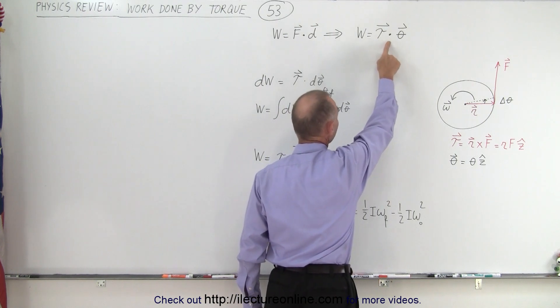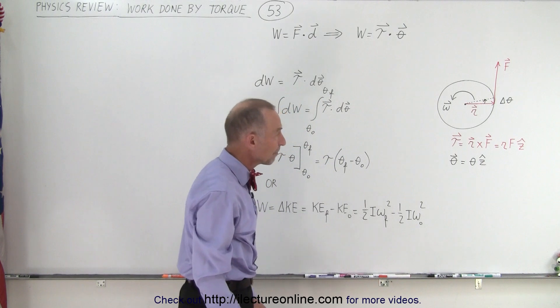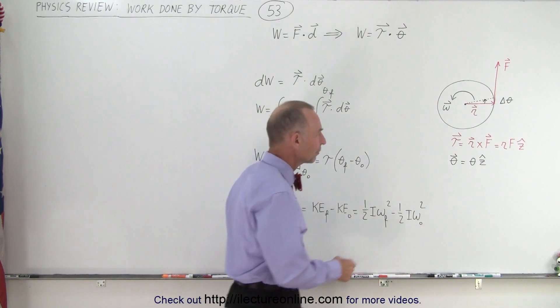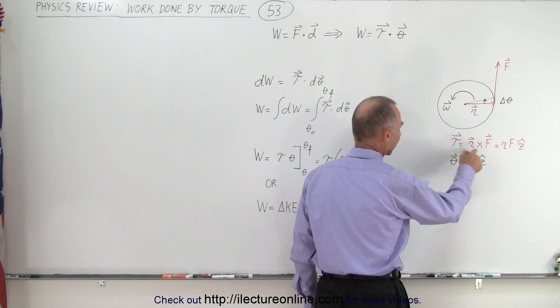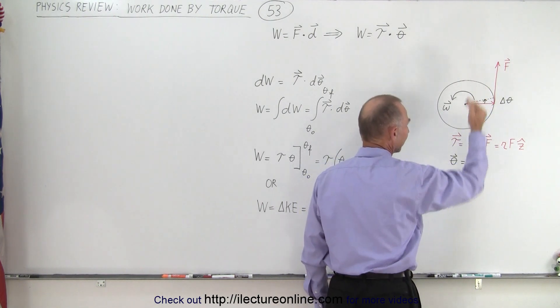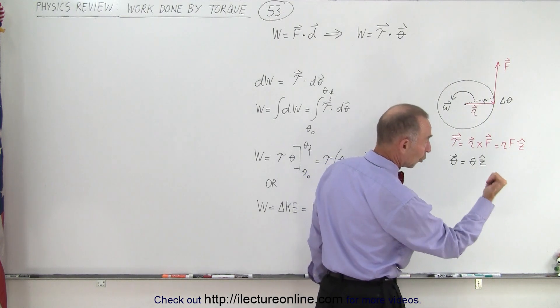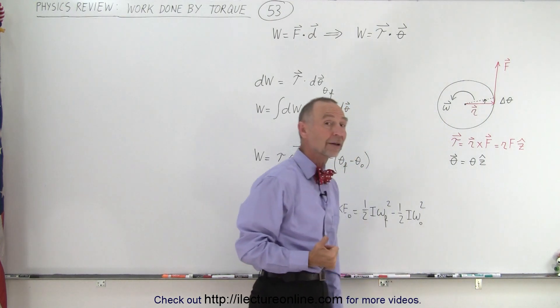Notice it's the dot product between the torque and the angular displacement. Now what are the directions of those? You can find the direction of the torque by taking the cross product between the positional vector and the force. If you use your right hand rule, the torque will point out of the board.